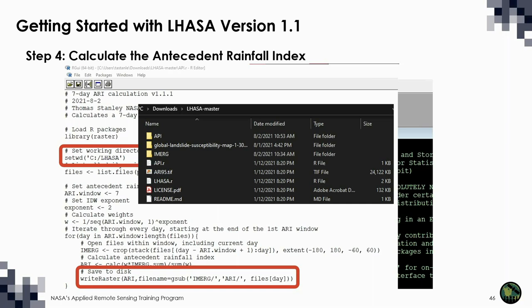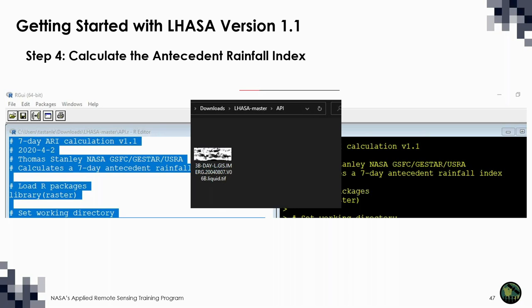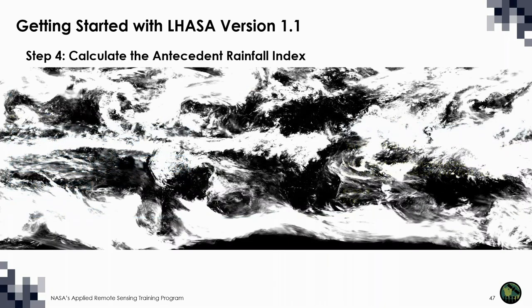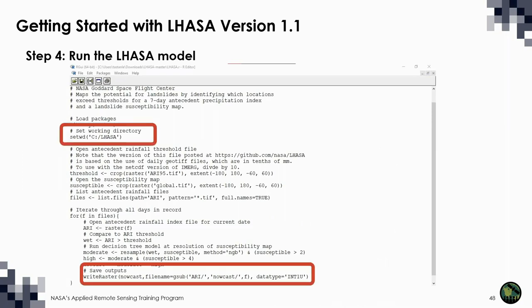Now we're ready to run the script. There are multiple ways to run an R script, including from the command line. Today we'll run it inside the console so we can debug easily if a problem comes up. We can select all the text with Control-A, then use Control-R. It should run quickly on most computers. The last seven days of rain are now represented by a single weighted average. We're finally ready to run the model. Let's open up LASA.R. It looks like we need to fix the working directory again and add an output directory. The name of the susceptibility map doesn't match the name or location of the map we just downloaded, so let's move that too.